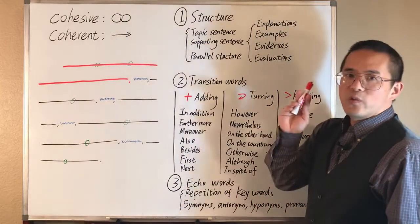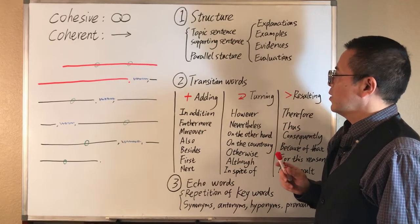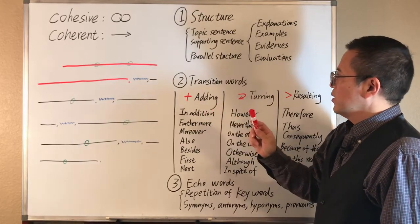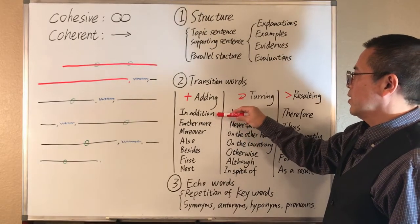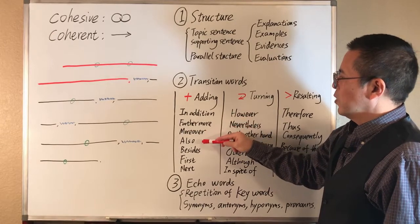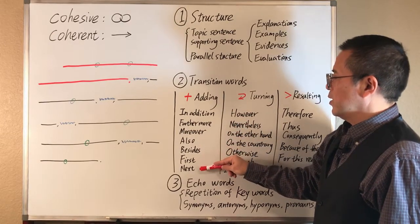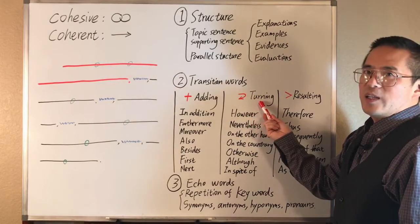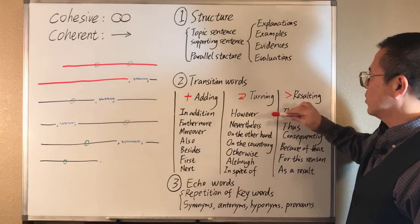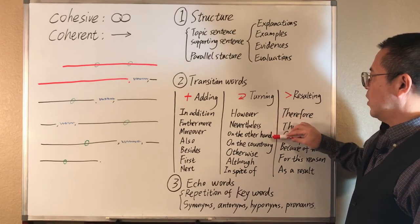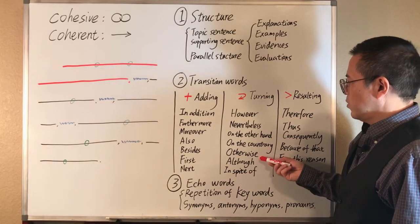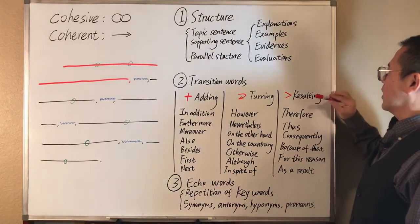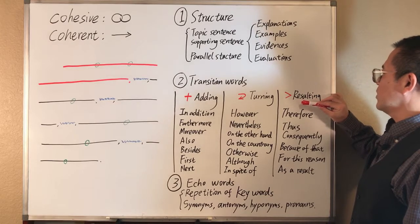Basically, there are three general categories of transition words. The first category indicates adding similar ideas or sequencing. The common transition words in this category include: in addition, furthermore, moreover, also, besides, first, next, and many others. The second category indicates a turning point or contrasting ideas. The common transition words in this category include: however, nevertheless, on the other hand, on the contrary, otherwise, although, in spite of, and many others. The third category indicates resulting or cause-effect relationships.